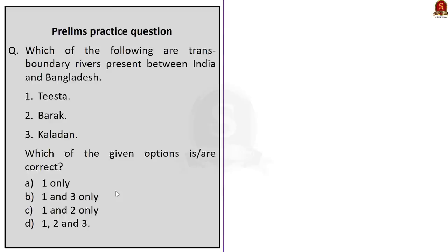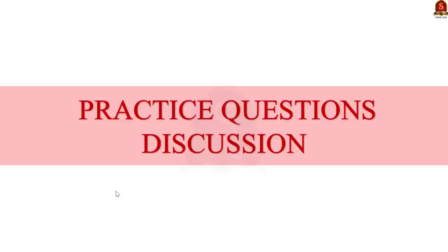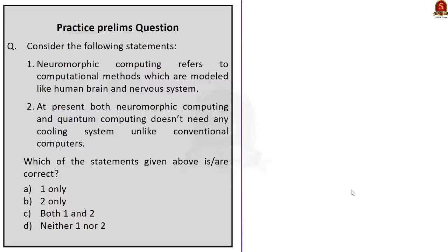With this, let us take up the practice prelims questions. We have three practice prelims questions today. The first is a two-statement question regarding neuromorphic computing. Statement one: neuromorphic computing refers to computational methods modeled like the human brain and nervous system. This statement is correct, as we saw in our discussion.